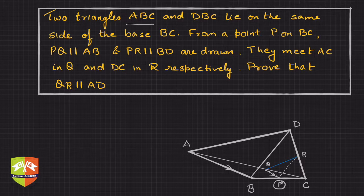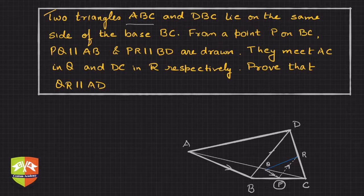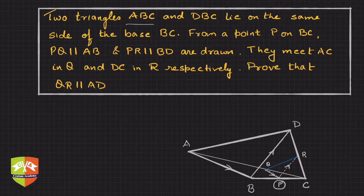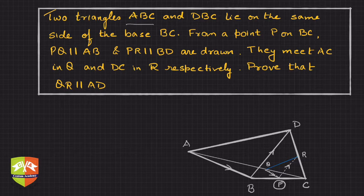PQ is parallel to AB and PR is parallel to BD. They meet AC at Q and DC at R, as shown in the figure. We have to prove that QR is parallel to AD.